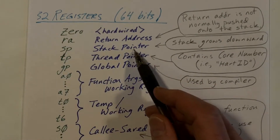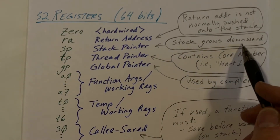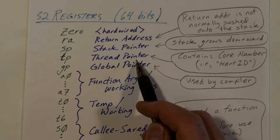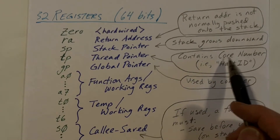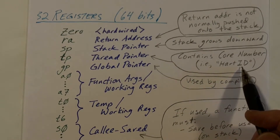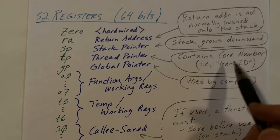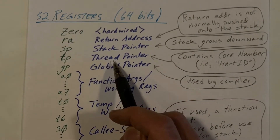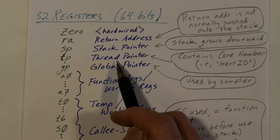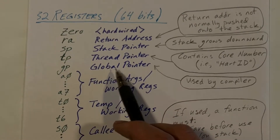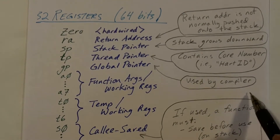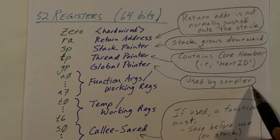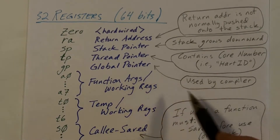SP is the stack pointer, and the stack grows downward. TP is the so-called thread pointer. In the XV6 kernel, it will contain the core number, which is the hart ID — the hardware thread. GP is a global pointer, used by the compiler and set and not changed. It's used to make accessing global and shared variables quick and efficient.